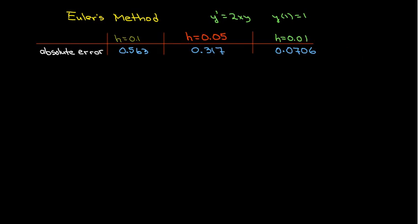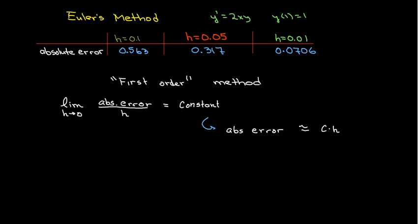These are the actual numbers for the absolute error for each value of h. And if you'll notice, very roughly, that when I cut the value of h in half, then I was not quite, but getting close to cutting the error in half. And here when I went from h equals 0.05 to 0.01, that's dividing h by five. Then the error was roughly divided by five as well. And that's because Euler's method is what we call a first order method. First order means that if you were to take the limit of the absolute error and divide it by h, that that would give you a constant, which means that the absolute value of the absolute error is roughly proportional to the value of h.